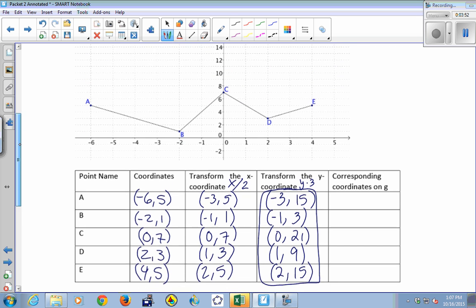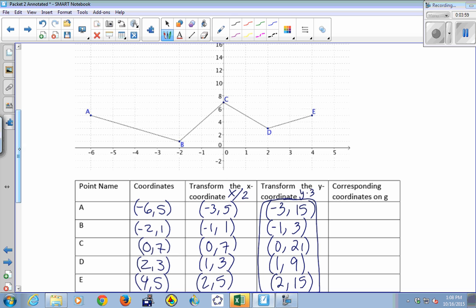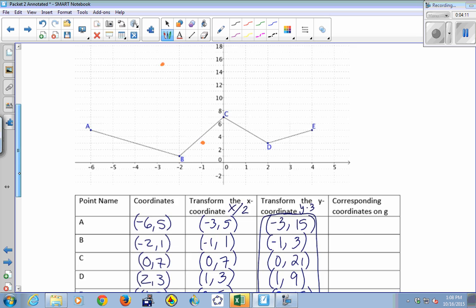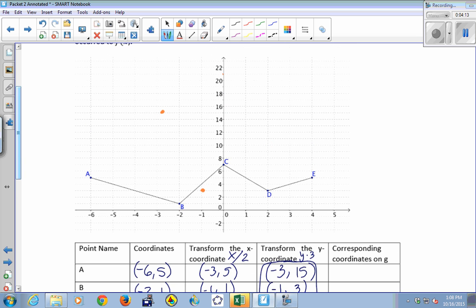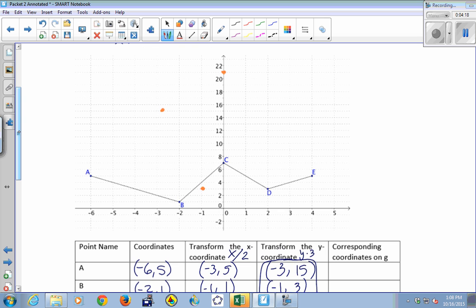So let's plot them. Let's see how it looks, if it looks any different. So negative 3, 15, and negative 1, 3, 0, 21. 1, 9, and 2, 15.